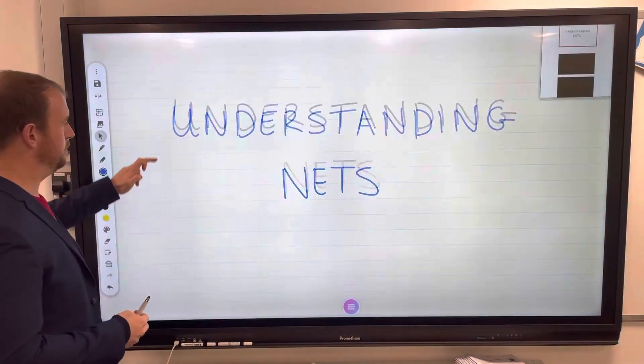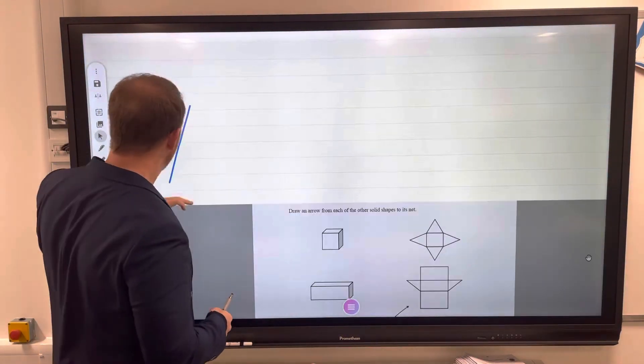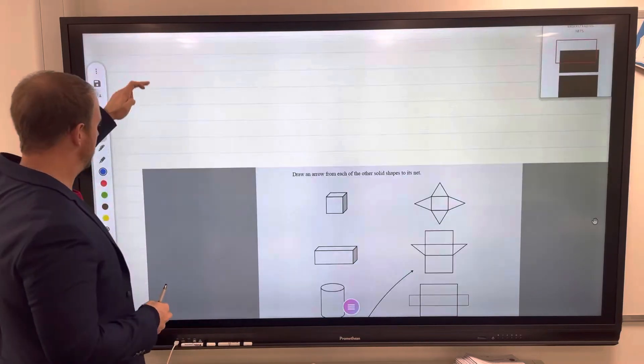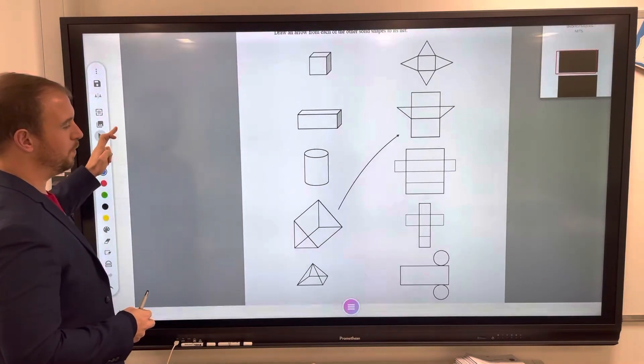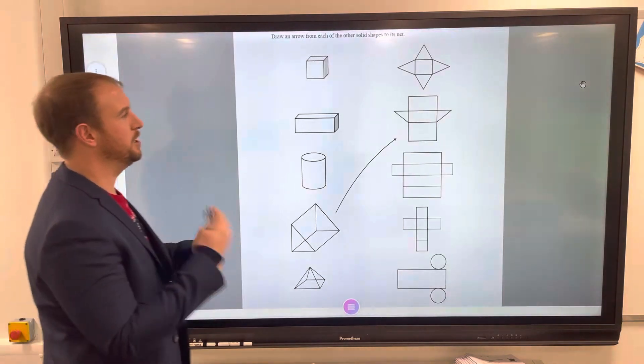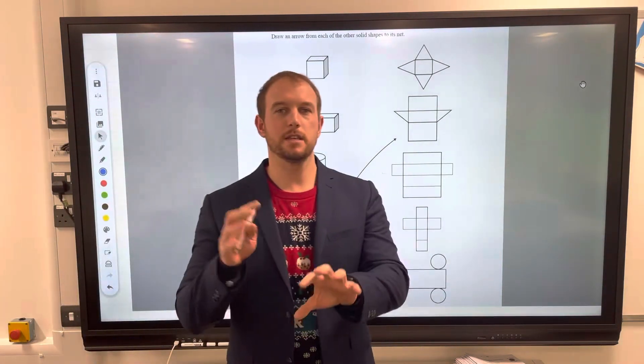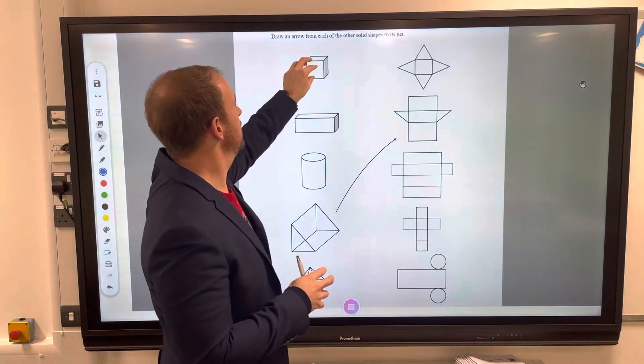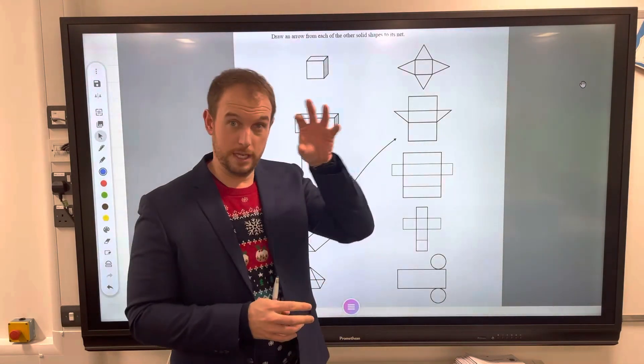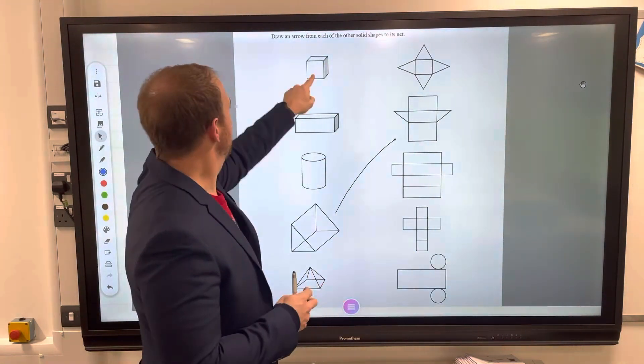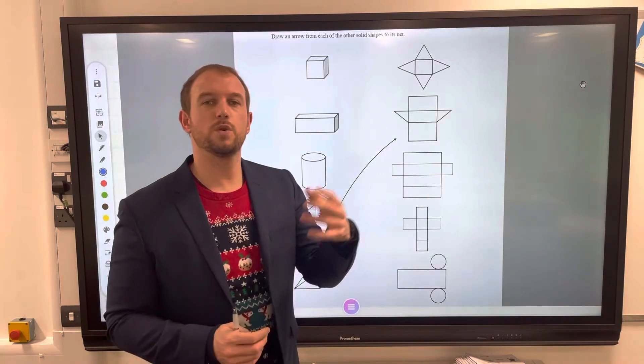So we then have different shapes here and they have their nets as well. Now we have to match these up, so we're going to look at different faces. The faces are the 2D shapes that are on these 3D shapes. So here we can see our faces consist of squares for this one here.